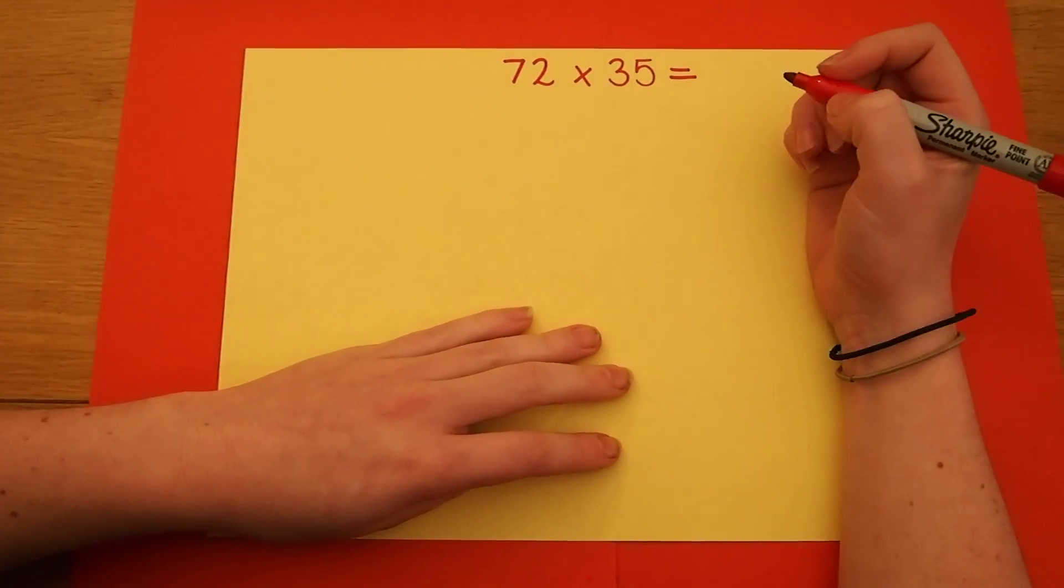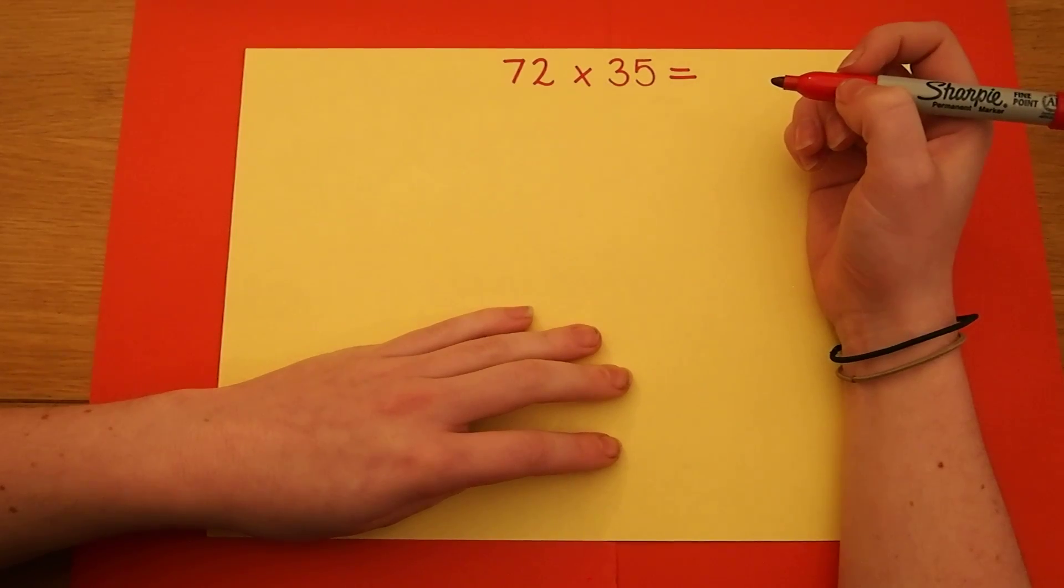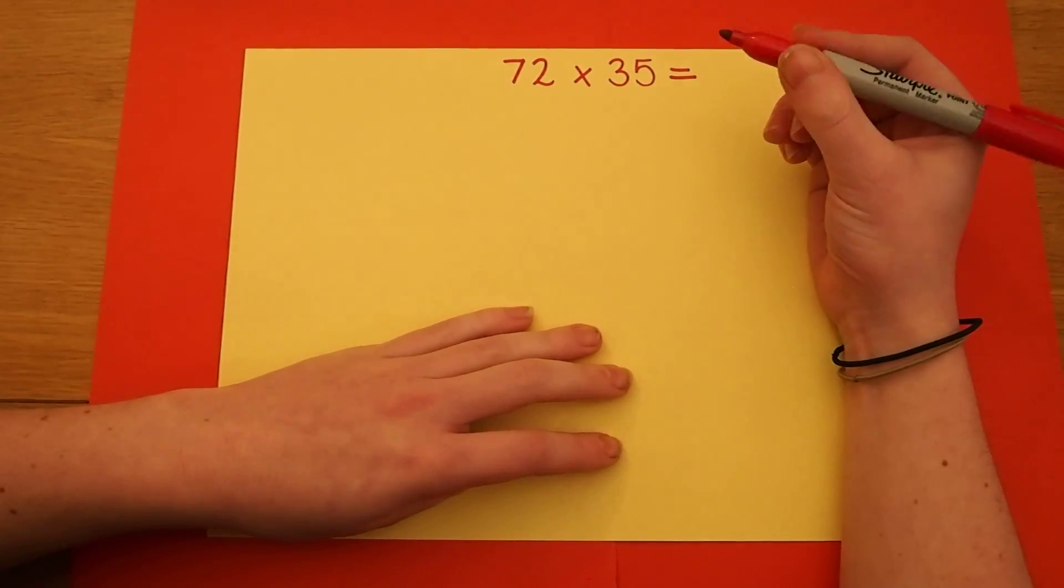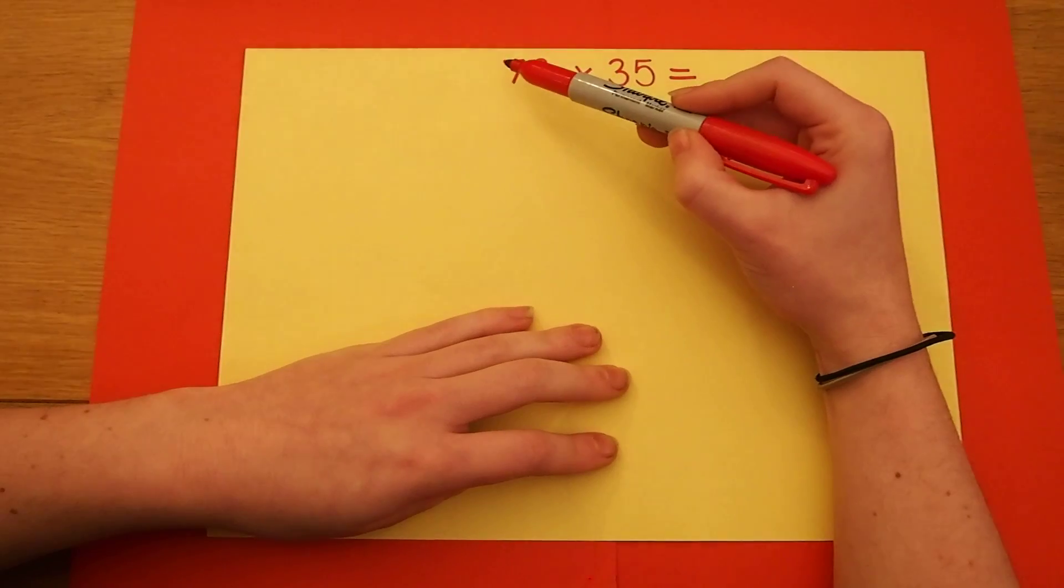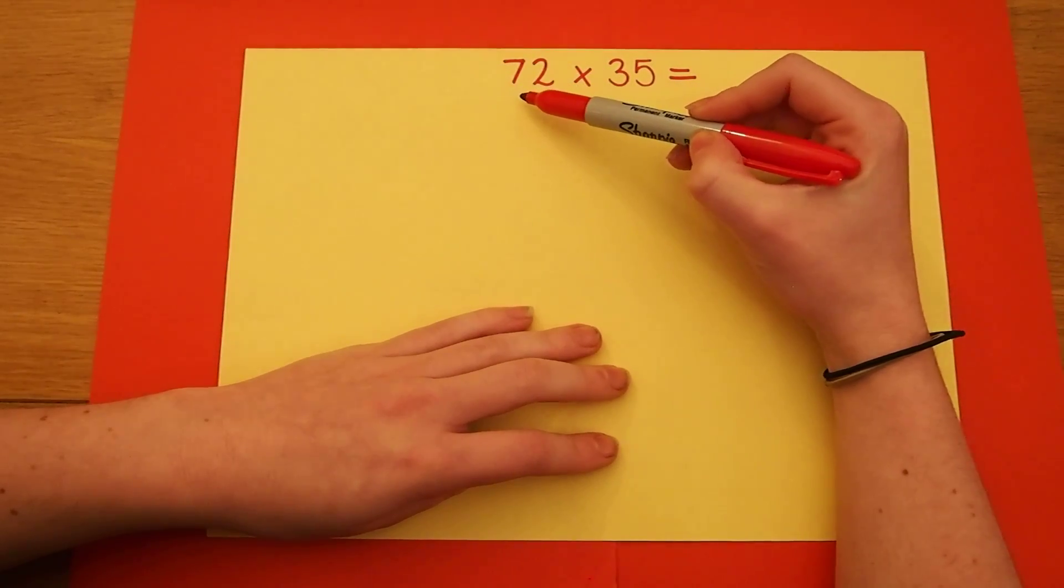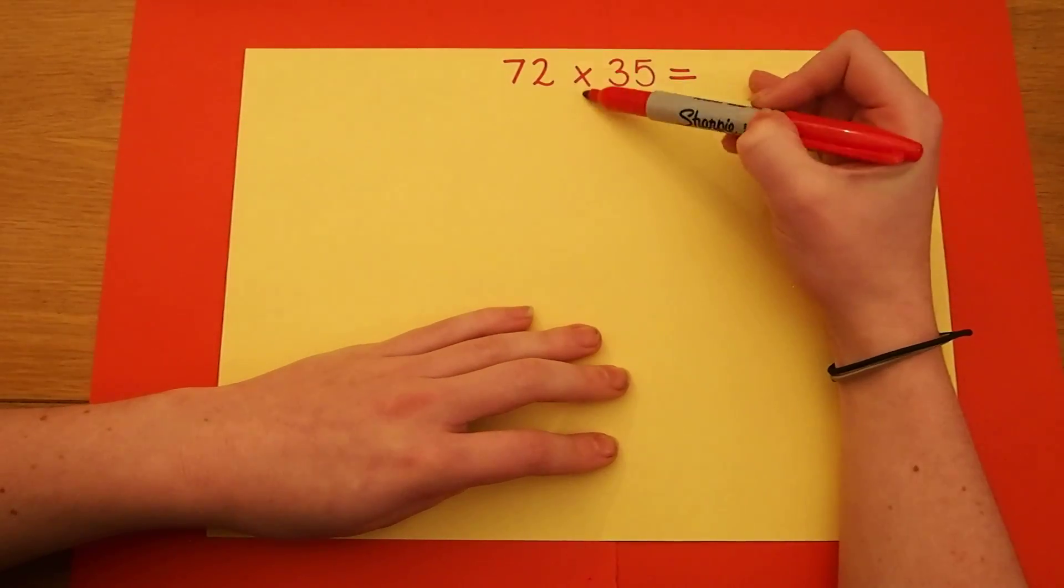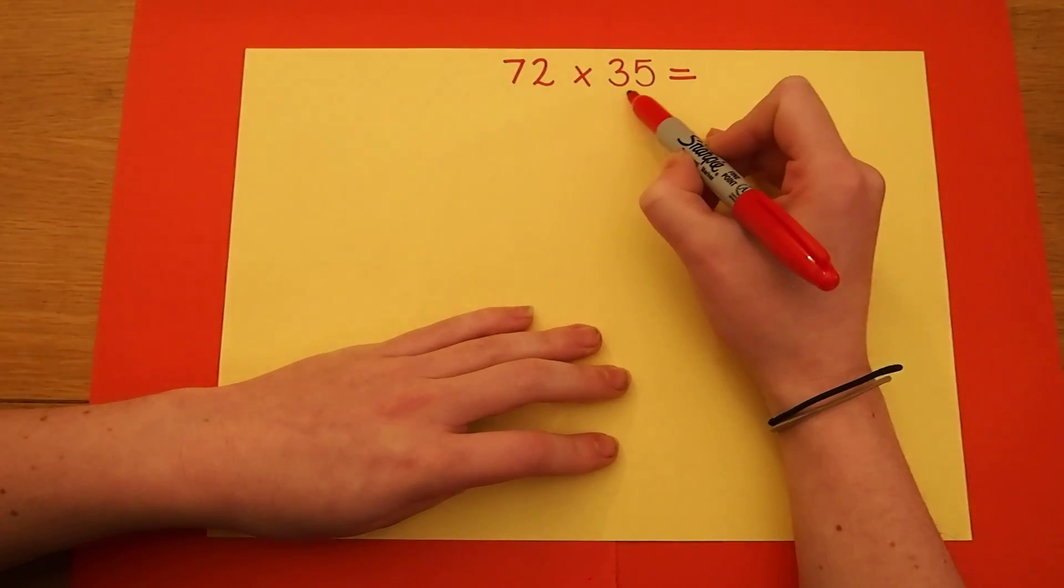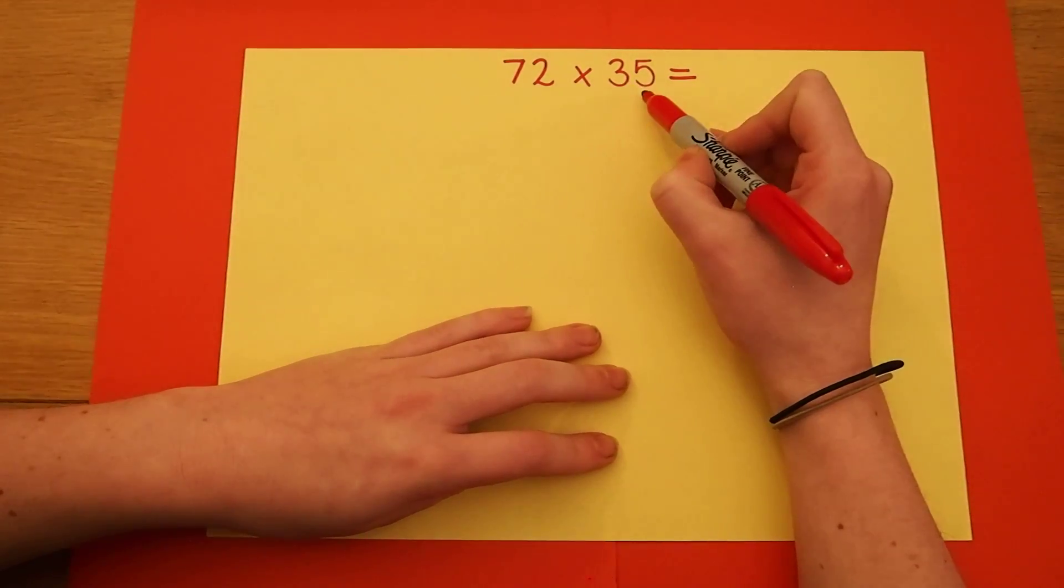We're going to look at the long multiplication written method. Long multiplication is when you have a hundreds, tens, and units or tens and units number multiplying by another tens and units number, so it's two digits.